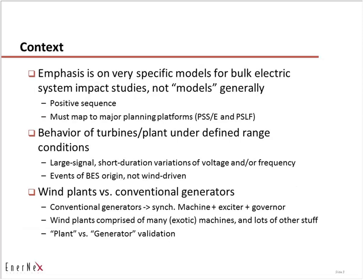When we look at VG plants relative to conventional generators, a couple of things pop out quickly. In conventional plants, we have one or maybe a few very large synchronous machines with well-characterized excitation systems and governors. With renewable plants, we have a very large number of relatively exotic machines, plus lots of other infrastructure to connect the individual sources of renewable generation to a delivery point to the grid.